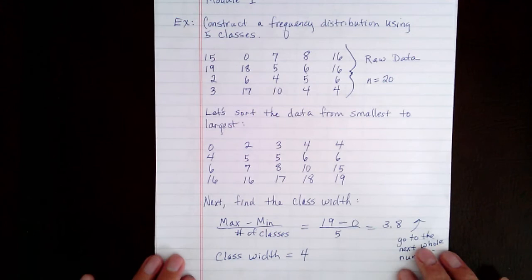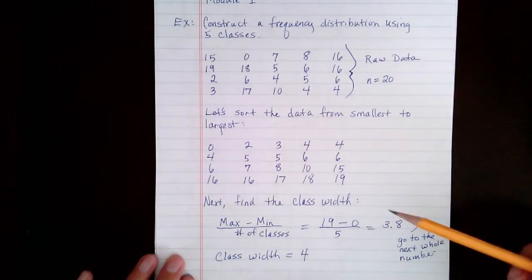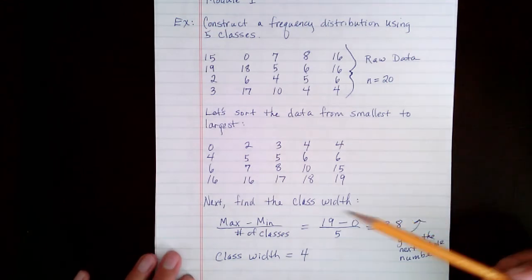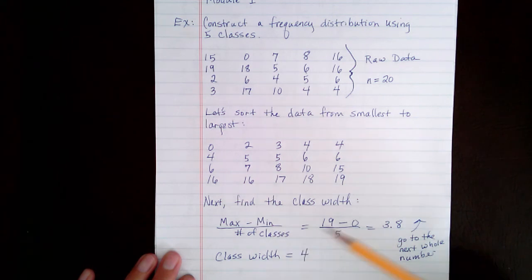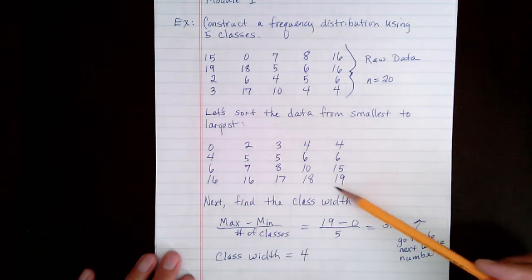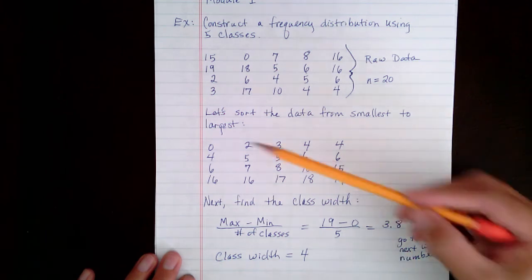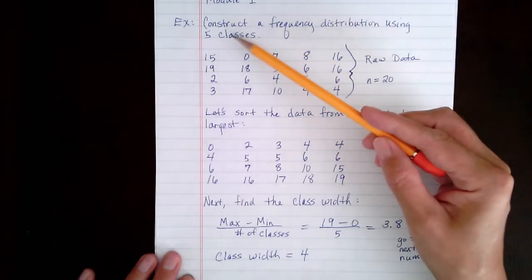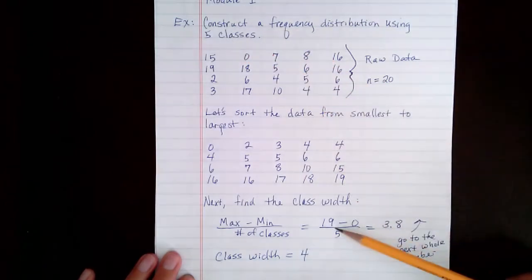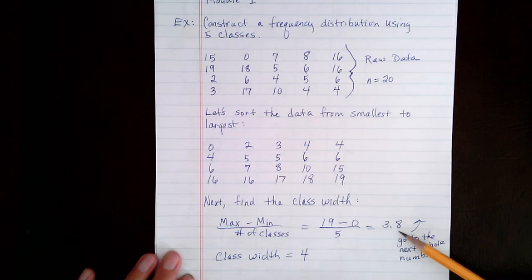The next thing we want to do is find the class width. To find the class width, you take your maximum data value and subtract the minimum data value and divide that by the number of classes. So here, our largest data value is 19, and our smallest data value is 0. And we were told to use 5 classes. So 19 minus 0 divided by 5 turns out to be 3.8. So we're going to go up to the next whole number, which is 4, and our class width is 4.